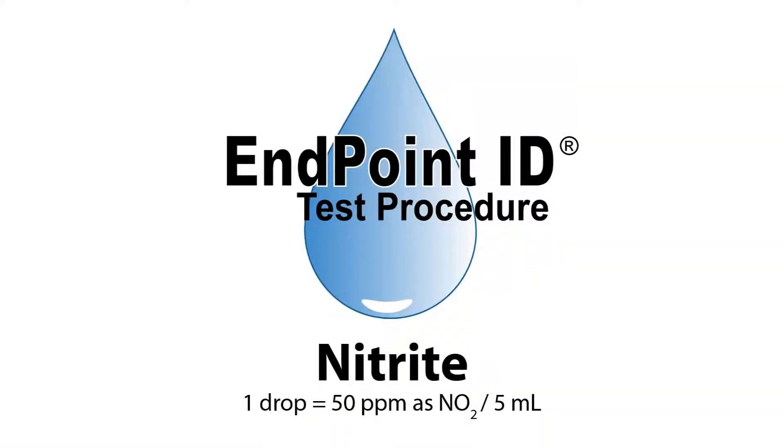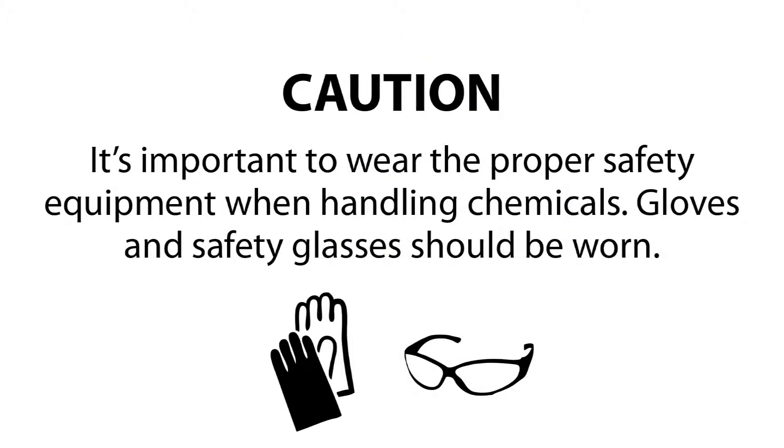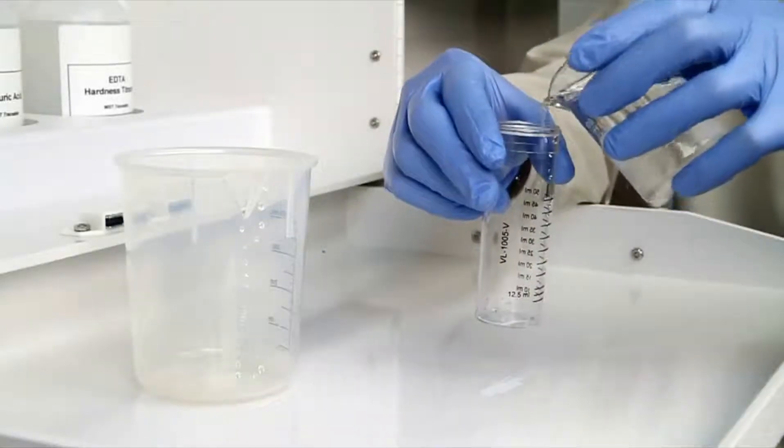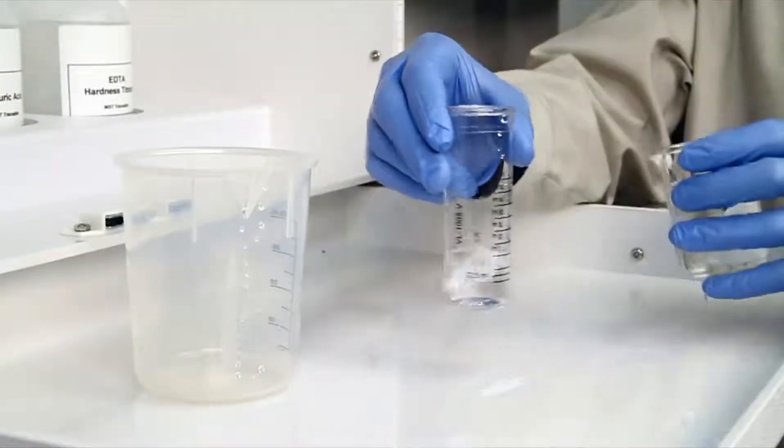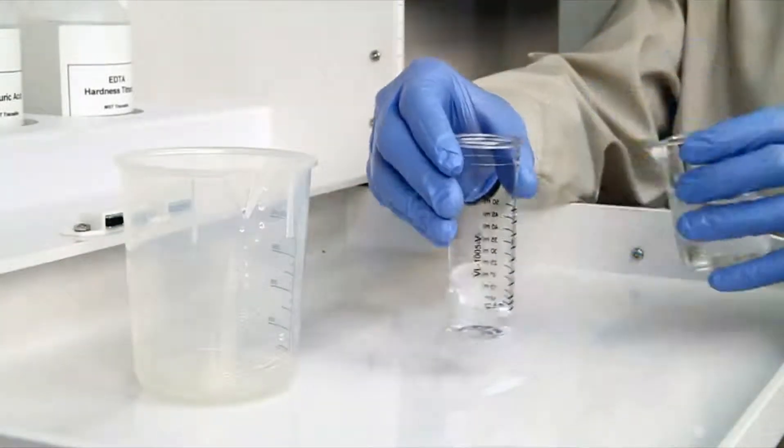This is a demonstration of a nitrite drop count test kit using endpoint ID procedures. The first step according to the endpoint ID procedure is to gather an accurate sample. The smallest change in sample size will lead to inaccurate results.